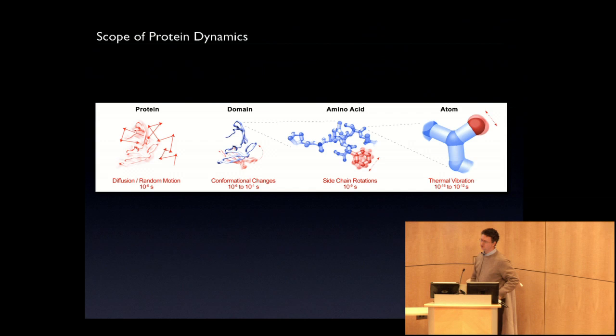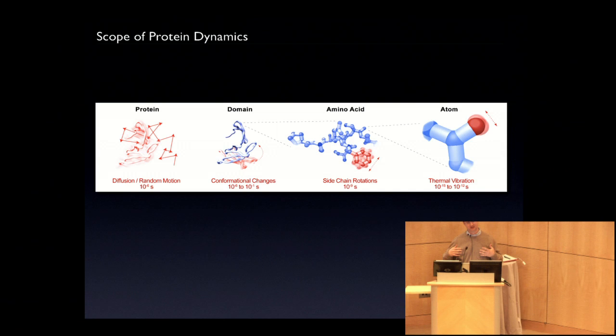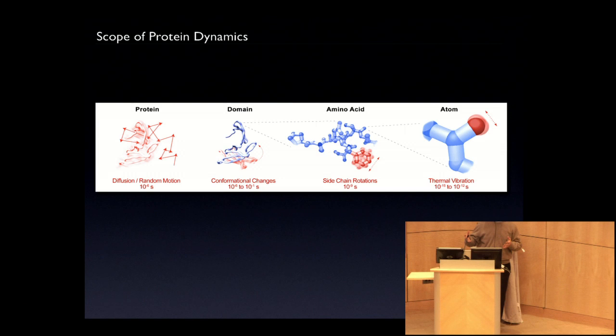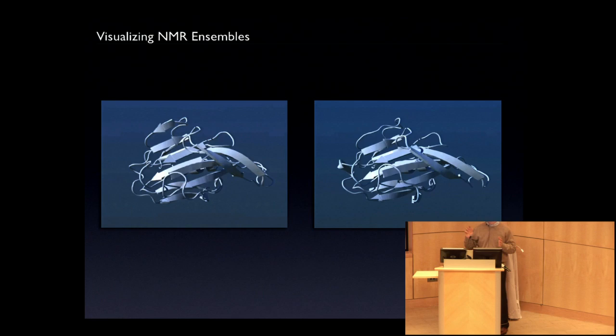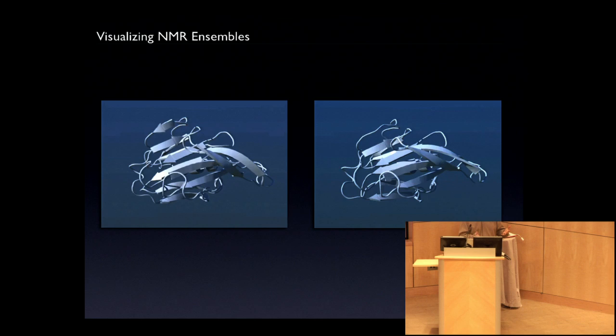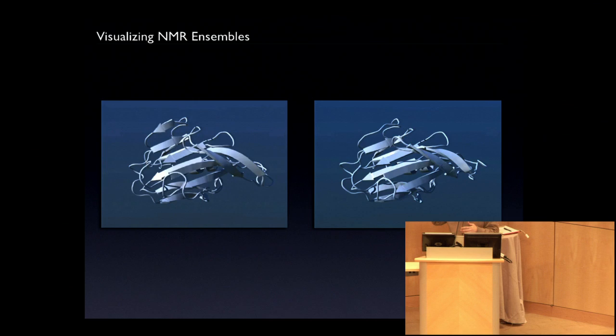So, protein dynamics — there are just so many things one could talk about. One aspect I'm personally interested in is trying to represent the different layers, levels, amplitudes, and time scales involved in protein motion, from thermal motion to the random walks and interactions that proteins undergo. One immediate approach is to simply look at what data sets already give us information on the dynamics and represent that data with as little filtering as possible — for example, an NMR ensemble played as a movie.